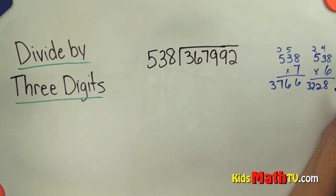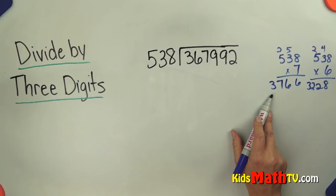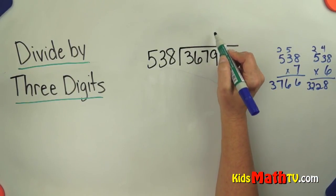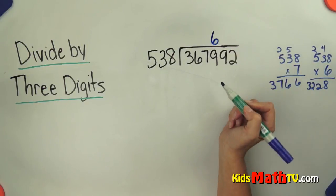So I have 3,228 is as close as I can get without going over. So there are 6. There's none there, none there. I have to put my 6 over the 9 in the thousands place.